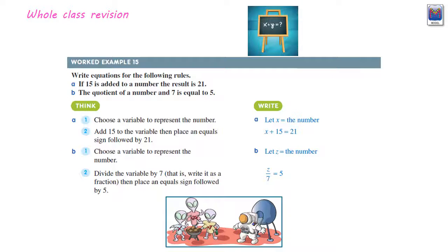A bit more revision. When writing equations, if 15 is added to a number, the result is 29. Now, when we do these ones, start with the variable bit, the number. Alright, so the number we are going to call x. If 15 is added to the number, the result is 21. Okay, and that's what we've got down here.